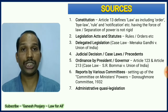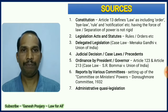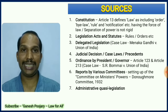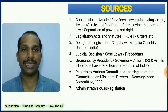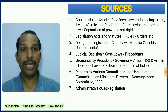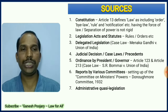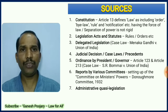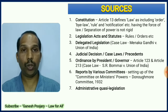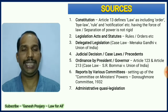So the Constitution is the primary source of administrative laws. Second, we have legislation — acts or statutes — which are also sources of administrative laws. Third, we have delegated legislations, which is a very important aspect. I have a series of videos on delegated legislation in my playlist — please watch them. Fourth, judicial decisions, case laws, or precedents are also sources of administrative laws. Fifth, ordinances by the President or Governor are also sources — the President's ordinance power is under Article 123 and the Governor's under Article 213.